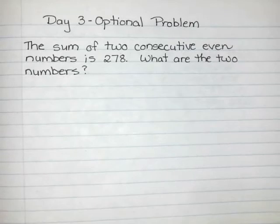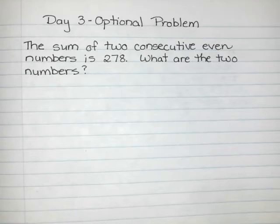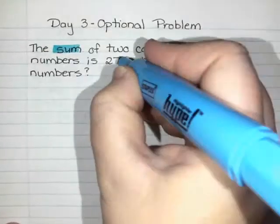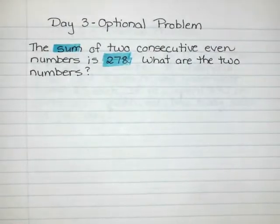First thing I want to do is look for my total and look for my comparison, because every question should have some type of comparison between your unknowns and then some type of total or equation that you're going to use to solve. I notice that it says the sum is 278, that's my total. That's what I'm going to make my equation out of.